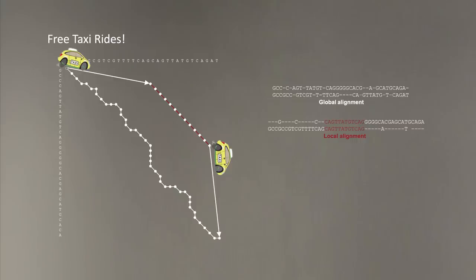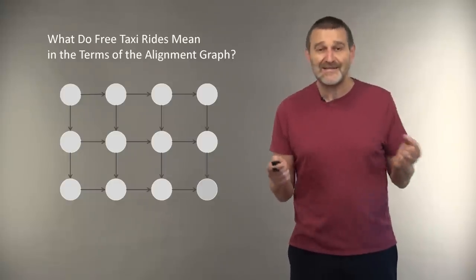My proposal for solving this problem, let's introduce free taxi rides through the alignment graph. Indeed, if we were able to start in the source and travel freely to the start of the conserved fragment, and then take another free taxi ride from the end of the conserved fragment to the destination, final node of the alignment graph, then we will be able to score this interesting segment by taking zero cost of taxi ride to the beginning of this fragment. Then real cost of the alignment of the fragment. And then plus another zero, which is the cost of another taxi ride.